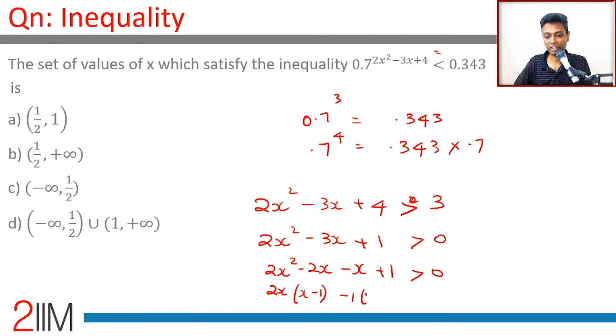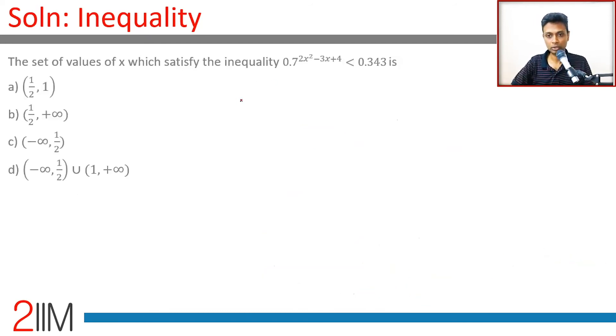Factoring further: (2x - 1)(x - 1) > 0, or equivalently (x - 1/2)(x - 1) > 0.